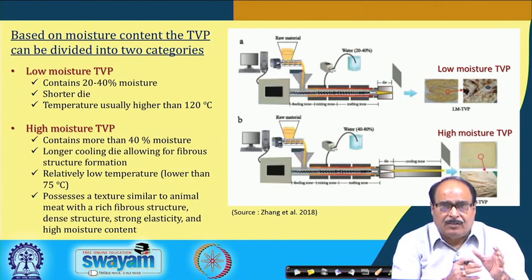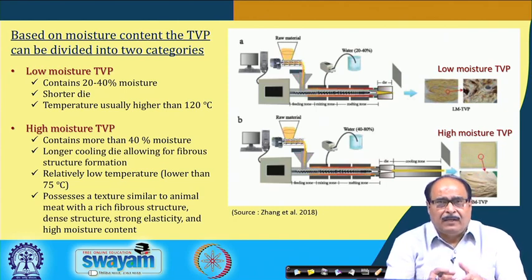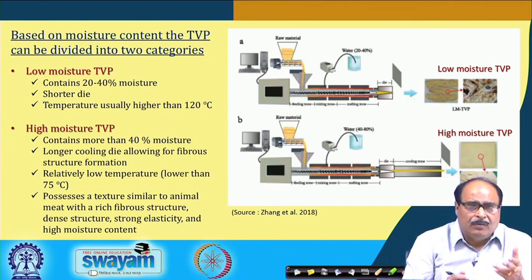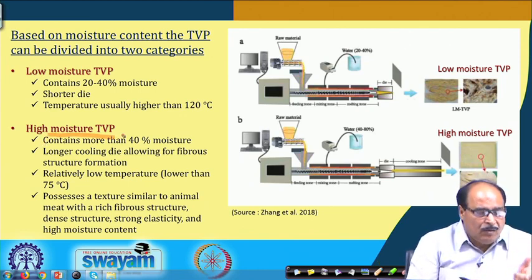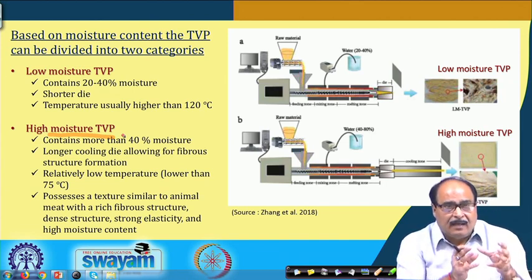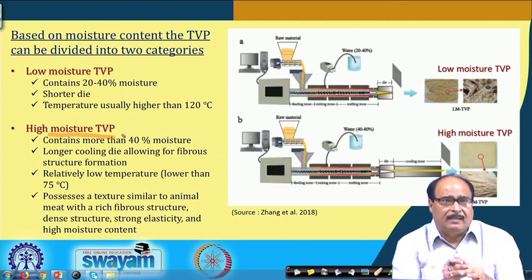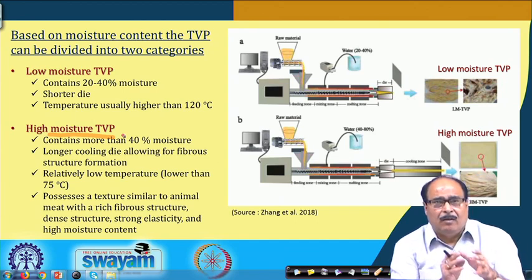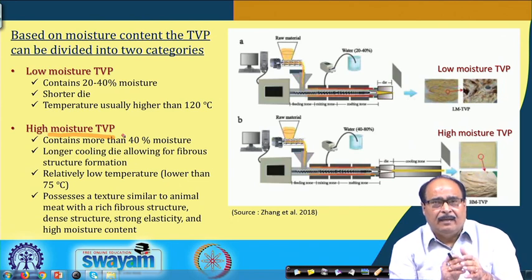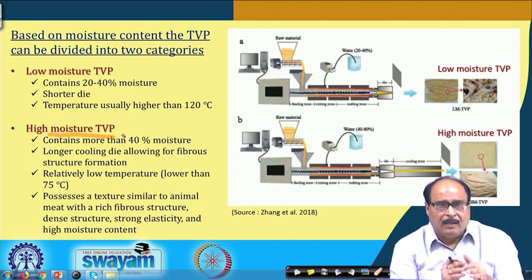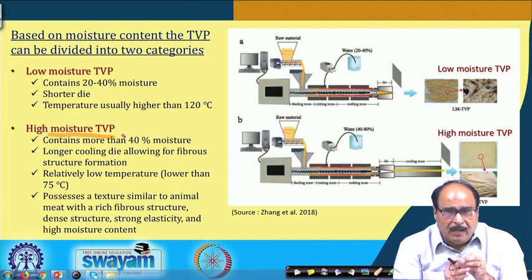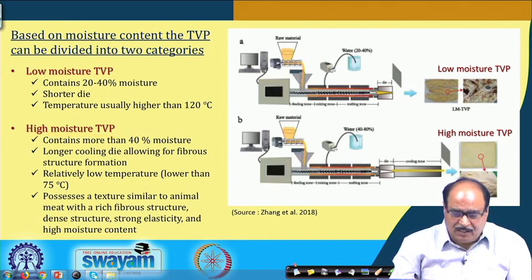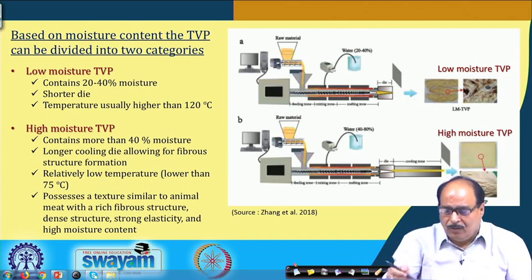Based on the moisture content of the textured vegetable protein obtained after extrusion, they can be of two categories. Low moisture TVP contains generally 20 to 40 percent moisture, uses a shorter die, and temperature usually higher than 160 degrees Celsius. High moisture TVP contains more than 40 percent moisture, uses a larger cooling die at relatively low temperature lower than 75 degrees Celsius, and possesses a texture similar to animal meat with a rich fibrous structure, dense structure, strong elasticity, and high moisture content.